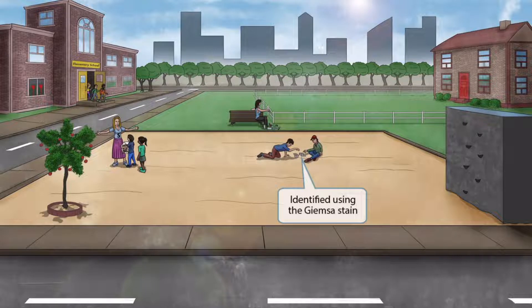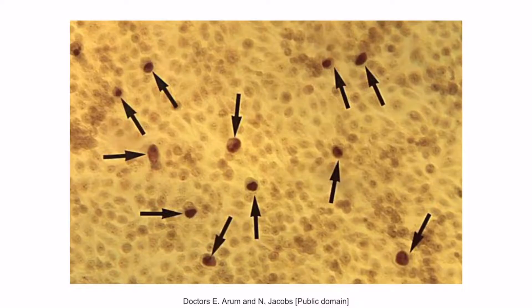We've added two kids on the playground playing card games together. Games sounds like Giemsa, so this helps you remember that chlamydia can be identified using the Giemsa stain. This is a Giemsa stain of chlamydia — the arrows are pointing to cytoplasmic inclusion bodies.